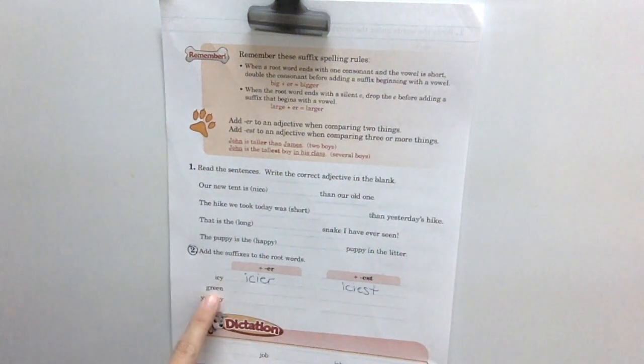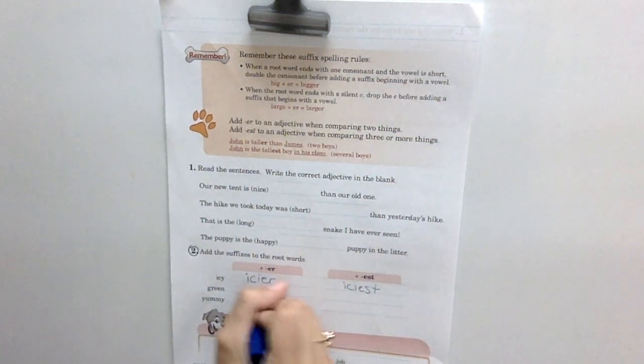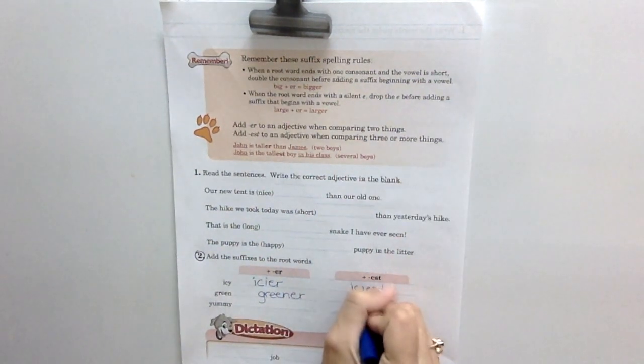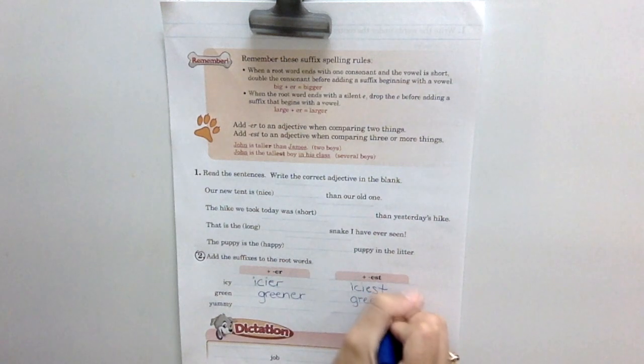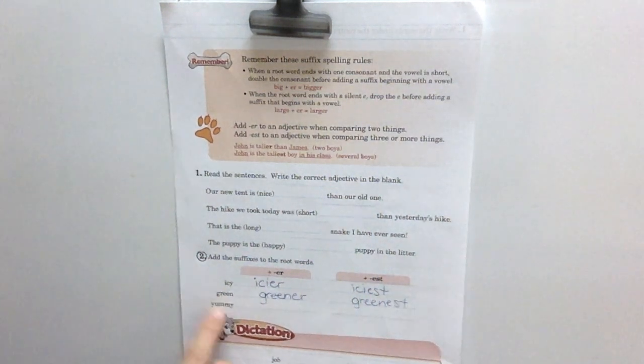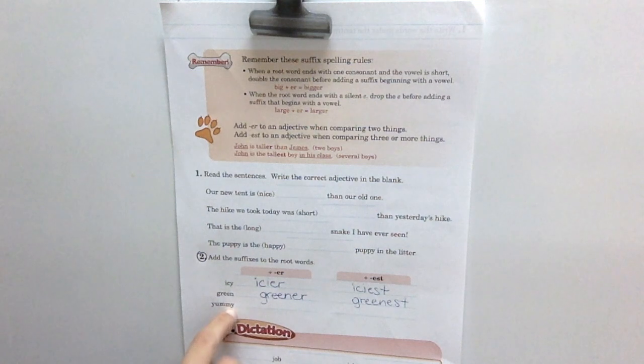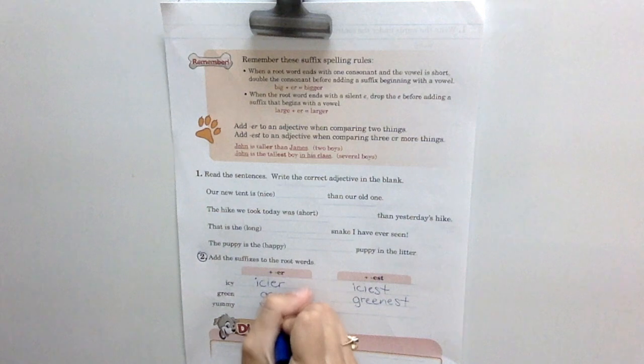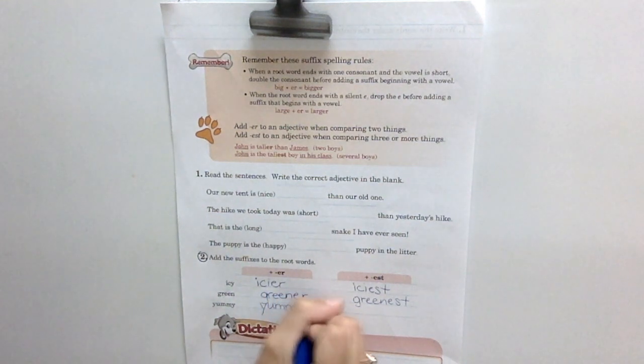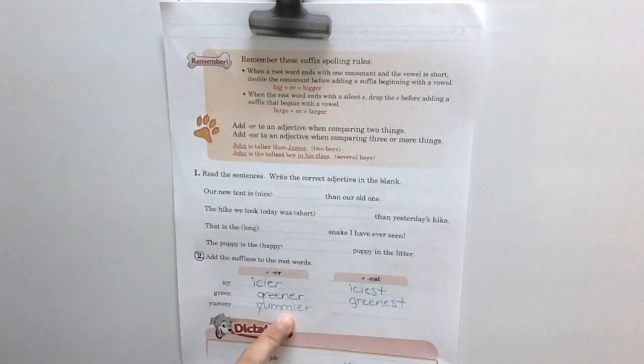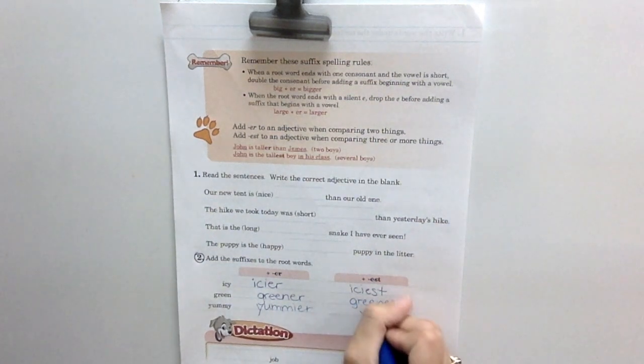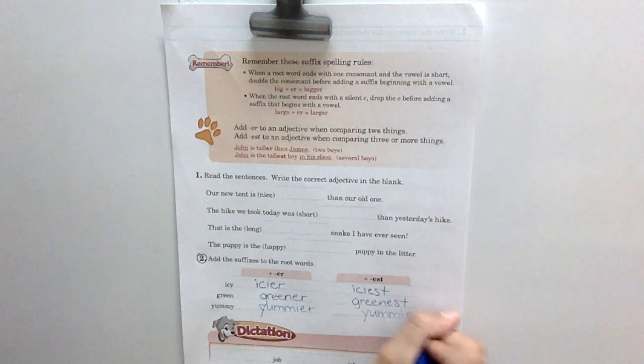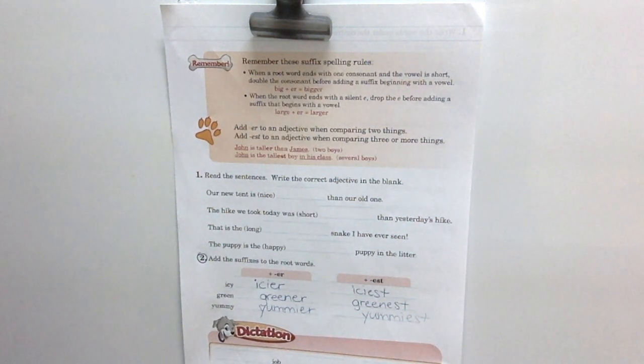Then we've got green, green, so greener, greener, and then greenest. Okay. Yummy. Oh, there's another y. So we're going to drop that y and add I-E-R. Yummier. Okay. And then yummiest. Okay. Very good.